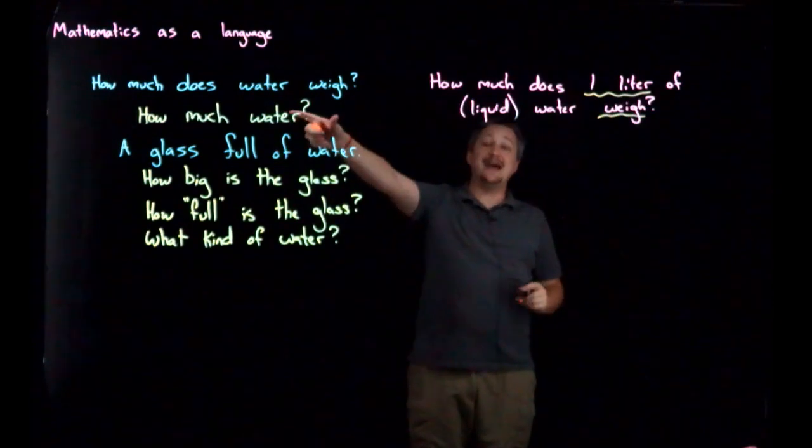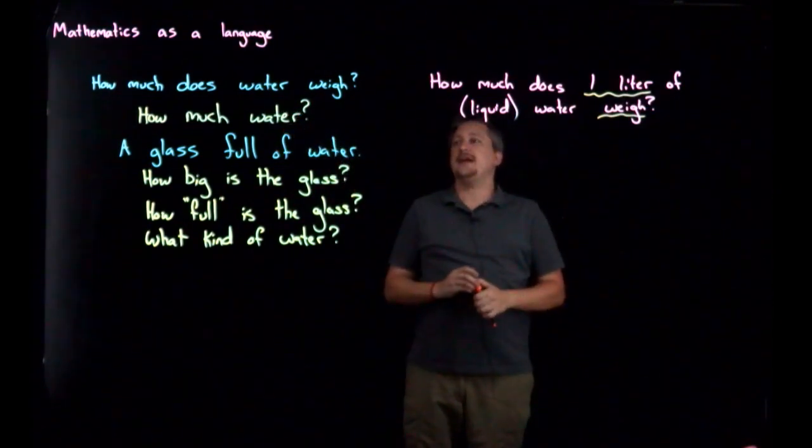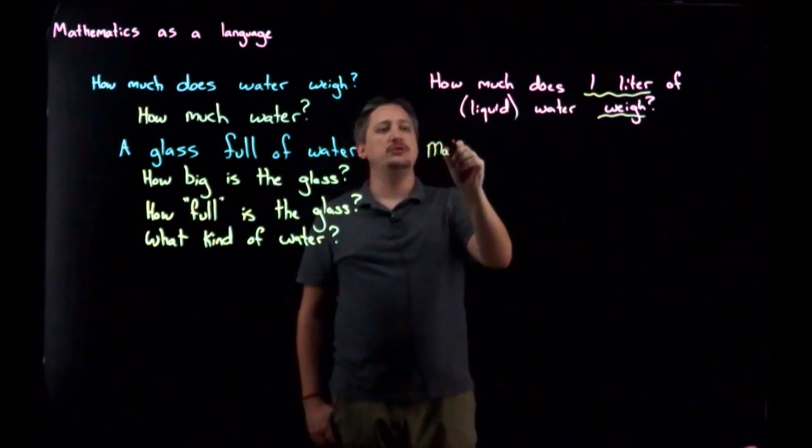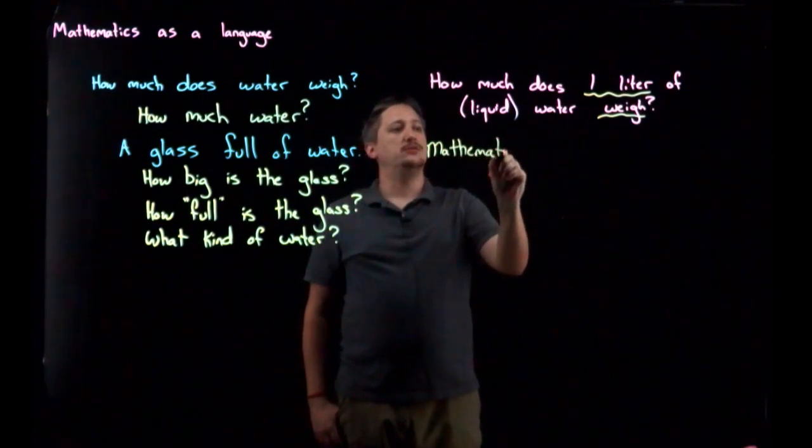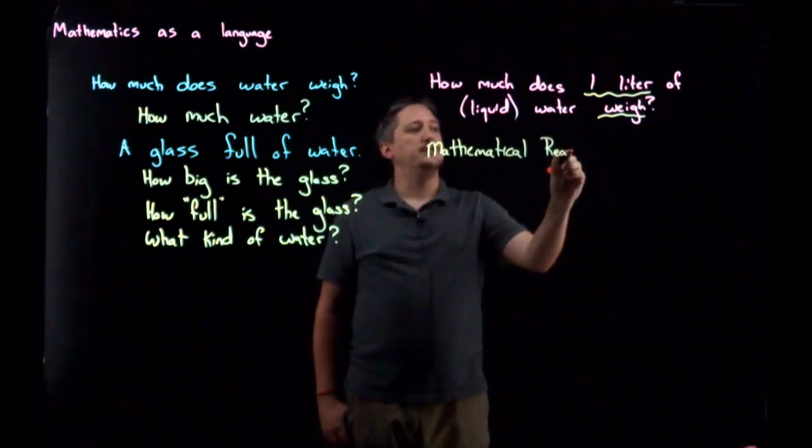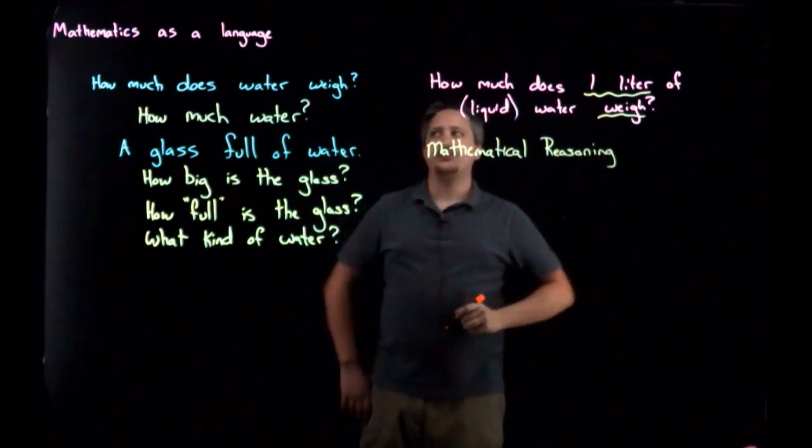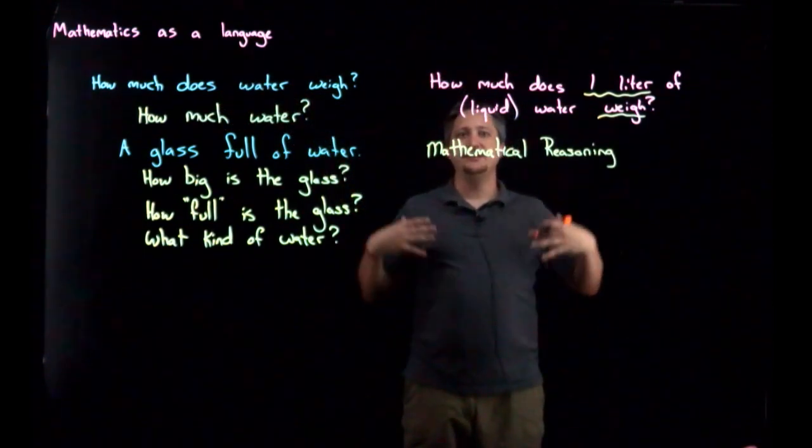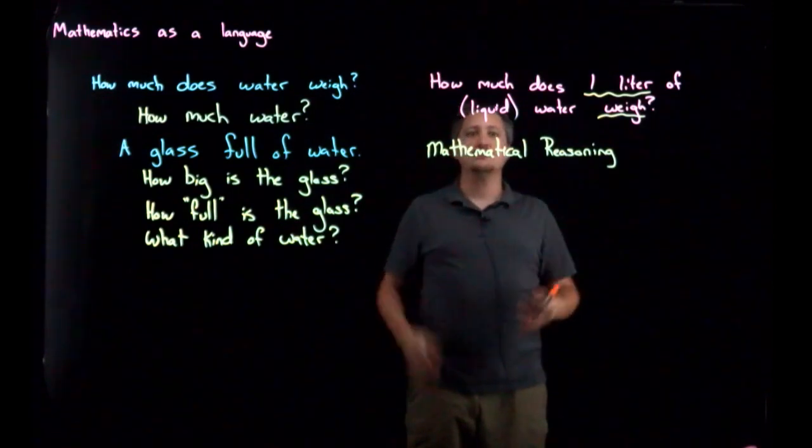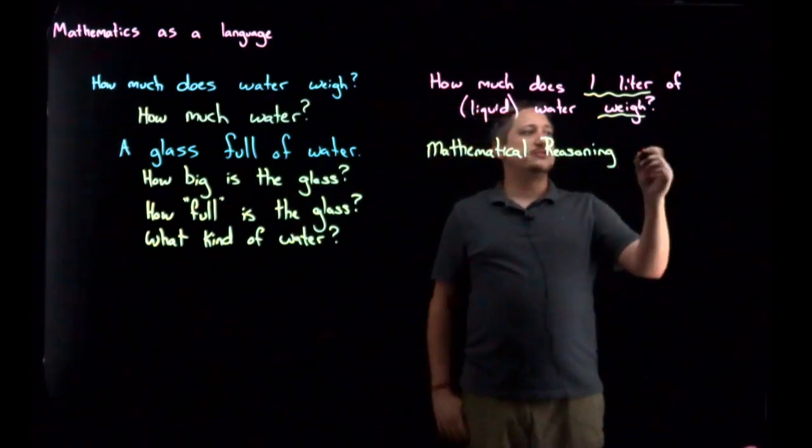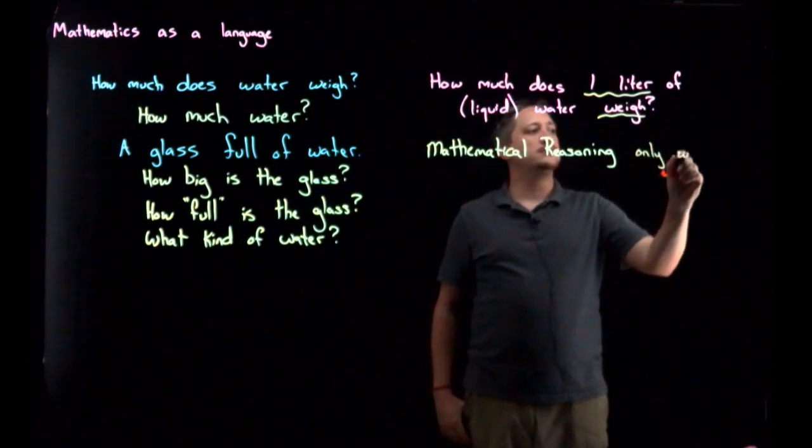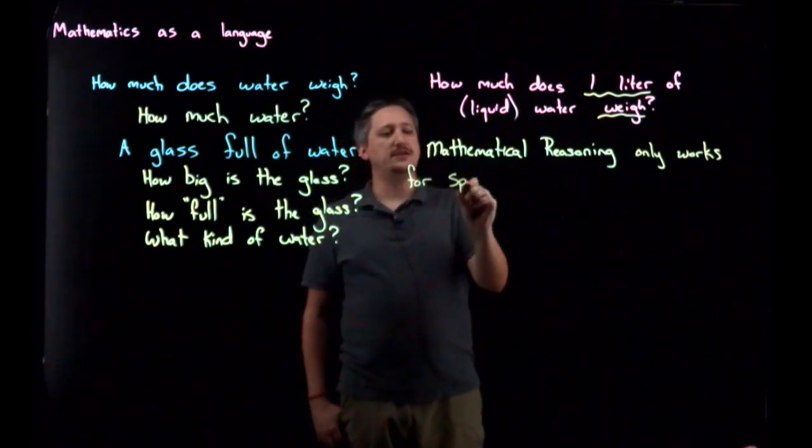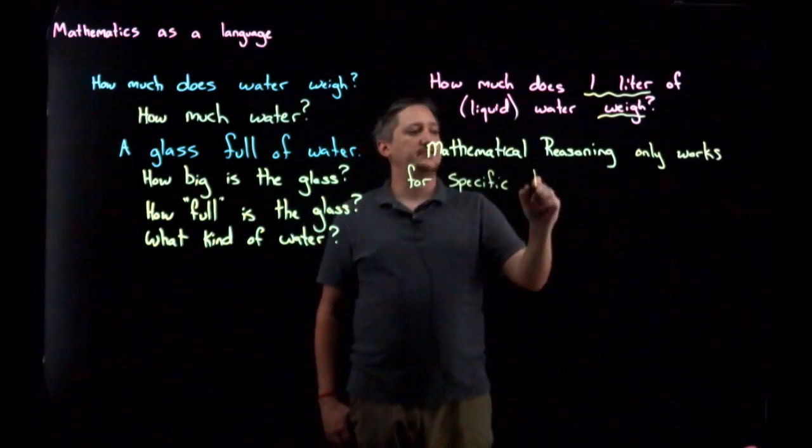So this mathematical reasoning approach—mathematical reasoning, which you remember from the phase one bit—this is about translating the beginning question, the vernacular, into some sort of quantified piece of data that you can work with. This mathematical reasoning process only works for specific kinds of information.